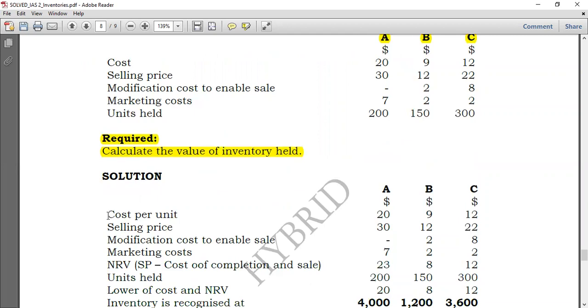So I have the cost per unit, no problem. But then I need to obtain the net realizable value for each product. So for product A, net realizable value will take the selling price, which is 30. Then I'll deduct the modification cost to enable sales, which is nil. So product A doesn't need to be modified. It is already in a sellable condition. And then I'll less the marketing cost, that is 7. So 30 minus 7, you have 23. So this will be your net realizable value for product A.